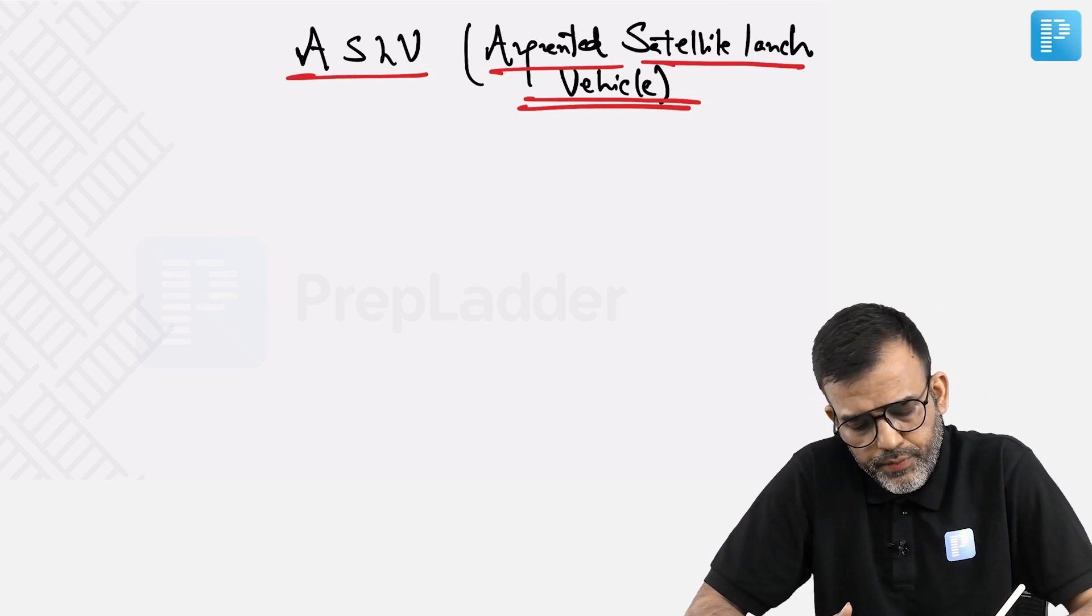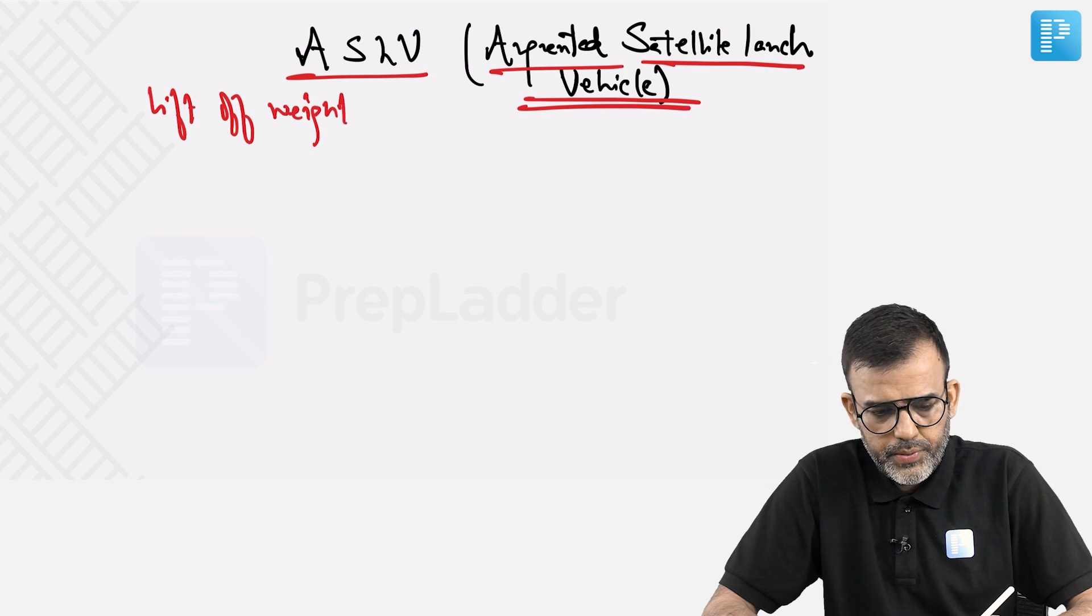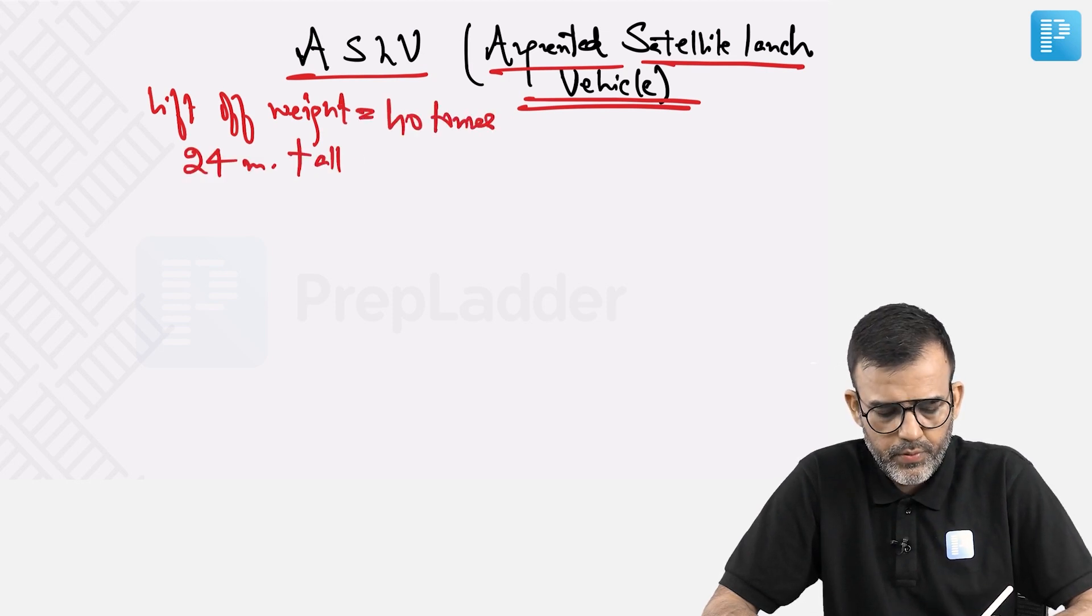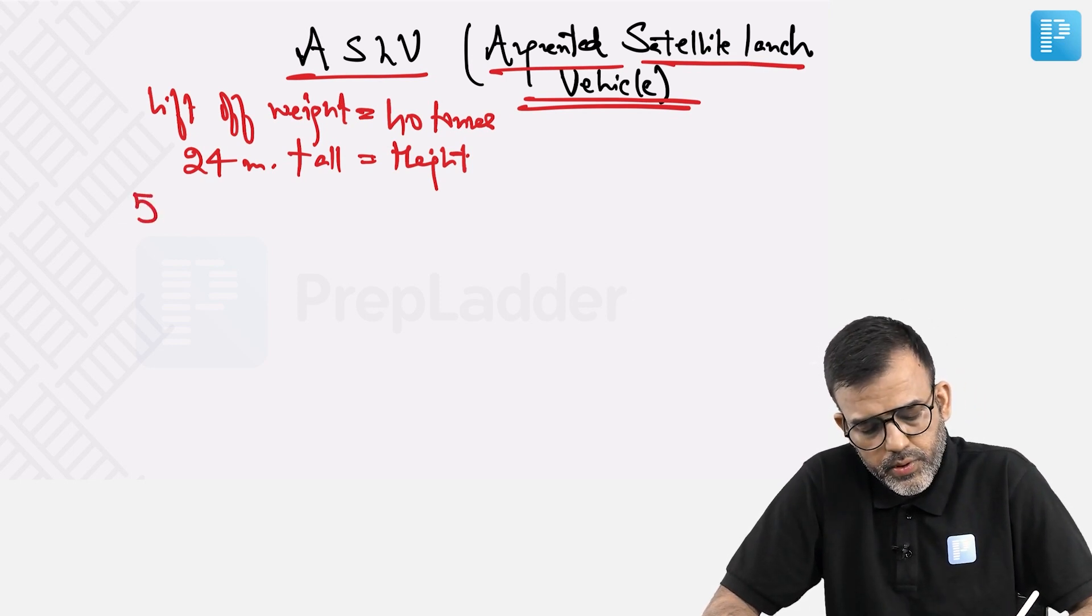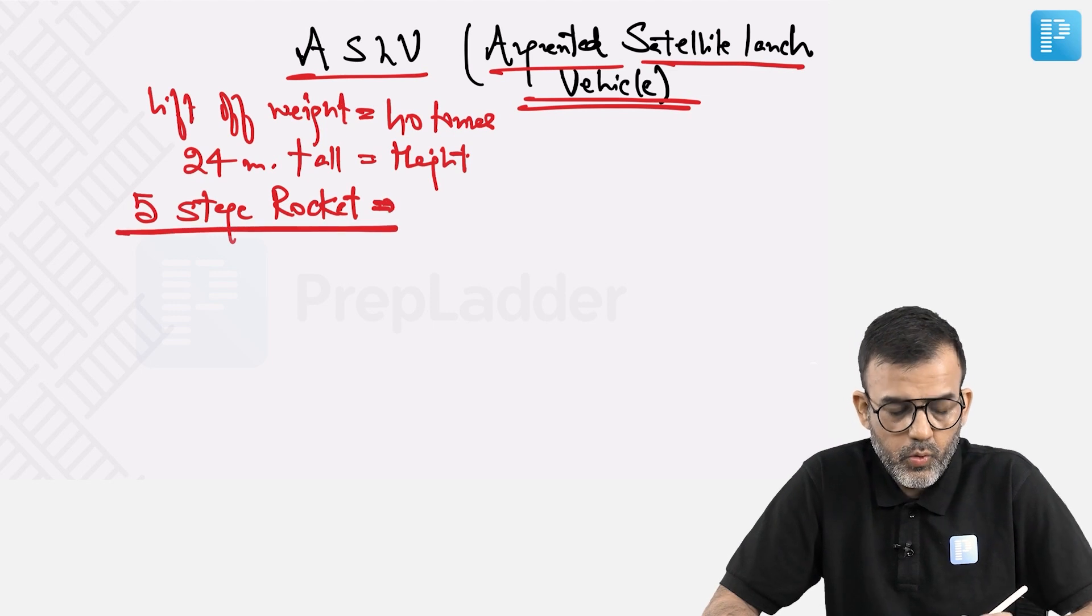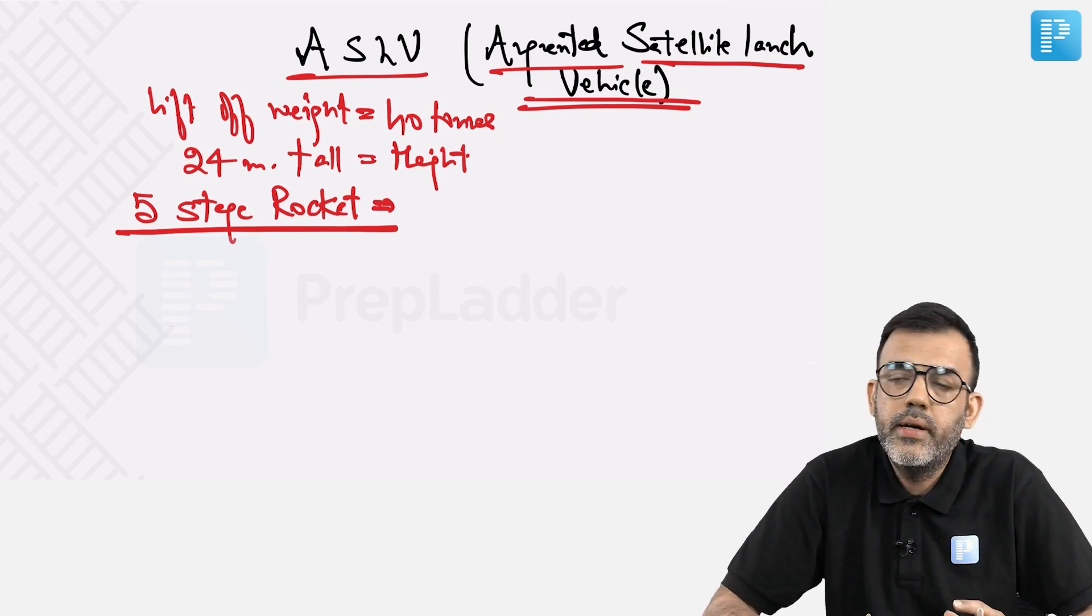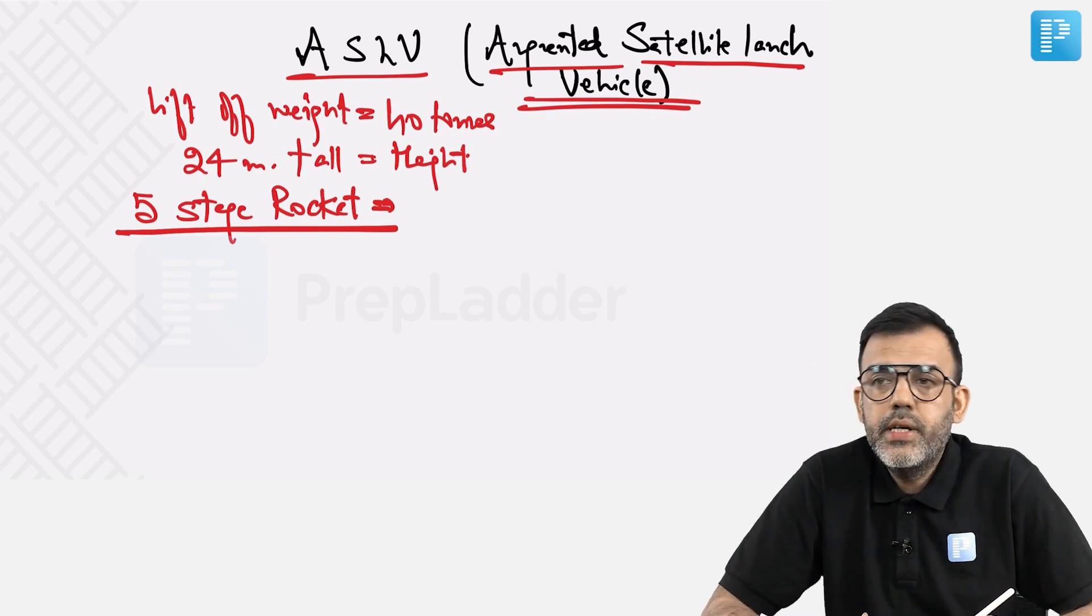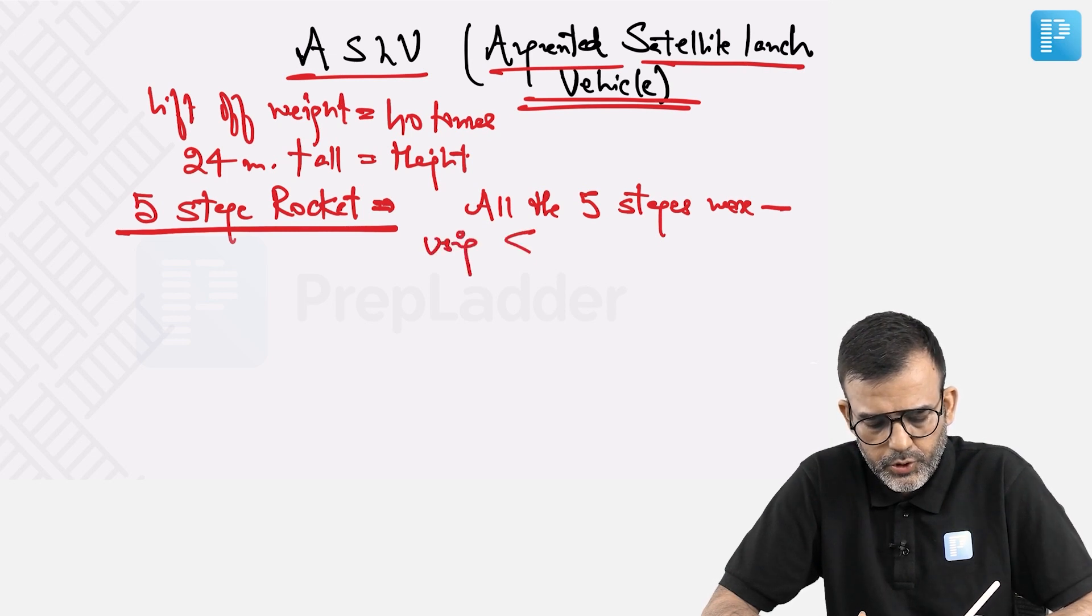The lift-off weight for this launch vehicle was 40 tons, 24 meter tall height, and SLV3 was a 4-stage rocket. One extra stage was added. SLV3 was 4-stage, and an extra stage is added, and it becomes ASLV, a 5-stage rocket. All the 5 stages were using solid fuel.